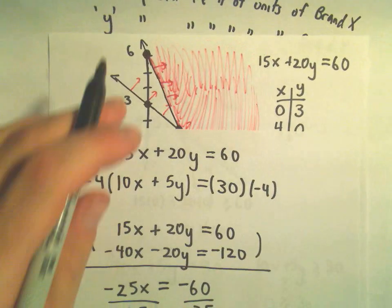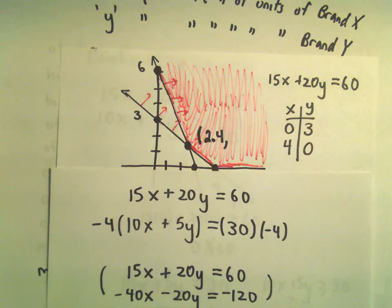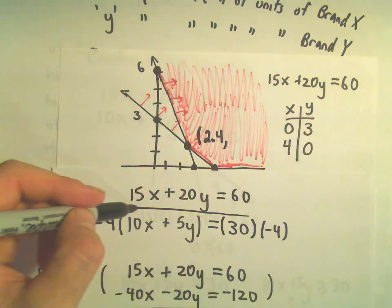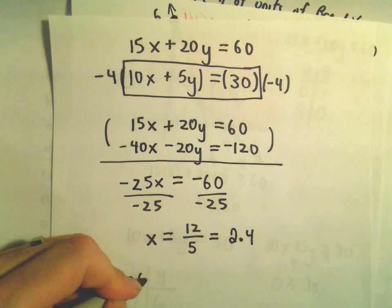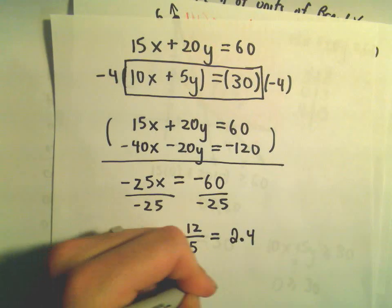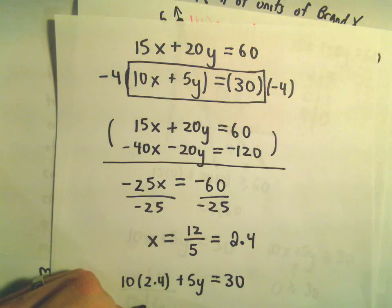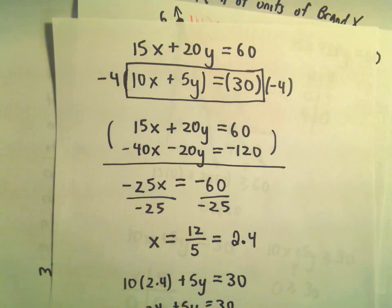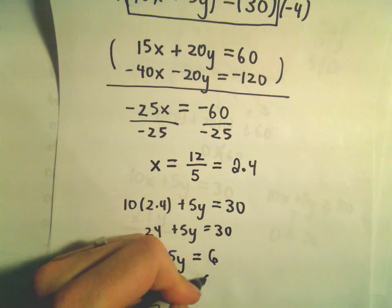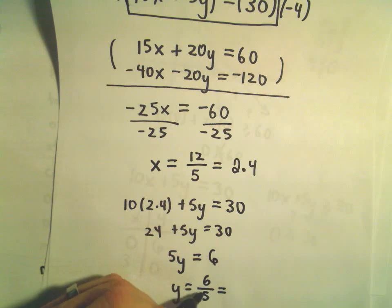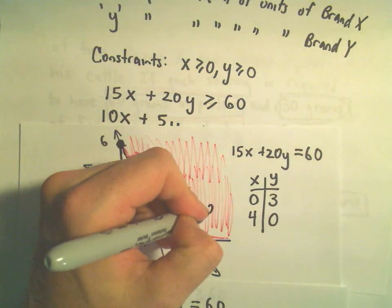Now we need the Y coordinate. Using 10X plus 5Y equals 30, we plug in X equals 2.4: 10 times 2.4 plus 5Y equals 30, so 24 plus 5Y equals 30. Subtracting 24 from both sides gives 5Y equals 6, so Y equals 6 over 5, which is 1.2. The point of intersection is (2.4, 1.2).